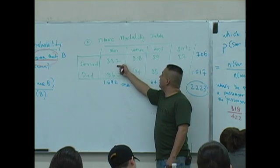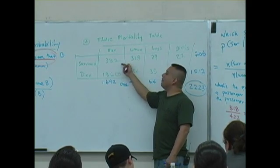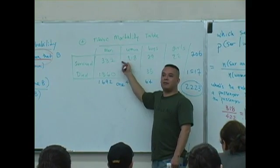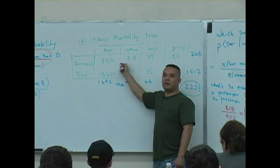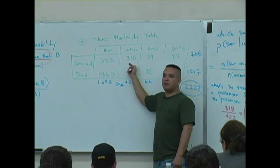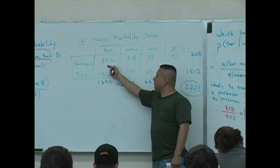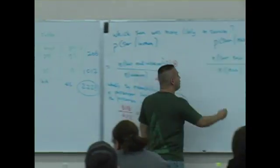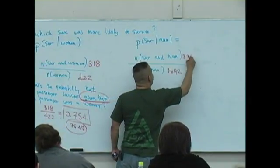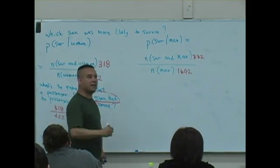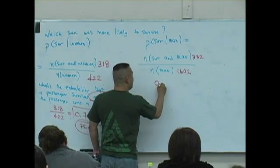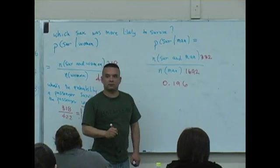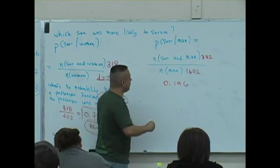So don't pay attention to just these numbers. Some people go, oh, 332 versus 318? Oh, it's the same number. I don't know what the problem is. Same number of men, same number of women survived. Well, let's see. What's the context? There was much more, what? Men. So 332 divided by 1,692. What is that as a decimal? 0.196. That's the probability.